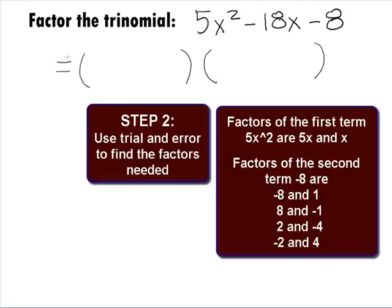In the second terms of the binomials, we need factors of negative 8. This would have to be negative 8 and 1, or 8 and negative 1, or 2 and negative 4, or negative 2 and 4. Since the product of these factors has to be a negative number, we need one positive factor and one negative factor.